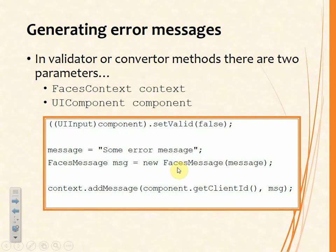Now, whether we're converting or validating, two of the parameters that appear in the method parameter lists are FacesContext and UIComponent, which we'll use in the method when we want to report a problem. We'll take that component, convert it to a UIInput type, and that means we can then call the setValid method and set that to false — that's a message to the framework to say don't go any further in the lifecycle, we've got a problem.